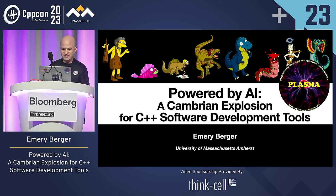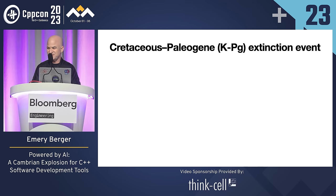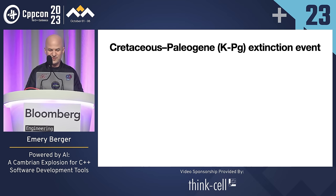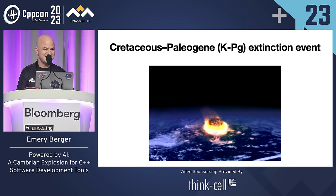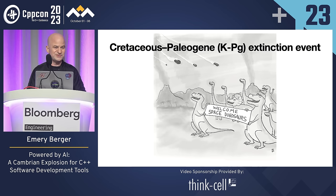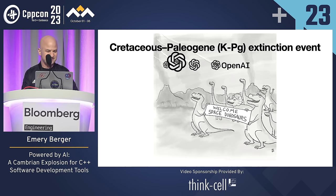Before I get into it, I want to first talk about the Cretaceous-Paleogene extinction event, sometimes called the KPG event. It's this big asteroid that crashed down off of the Yucatan Peninsula in the Gulf of Mexico. It wasn't really great news for the dinosaurs — it kind of wiped them out. And I think we're actually facing a similar extinction event, caused by the asteroid represented by OpenAI.